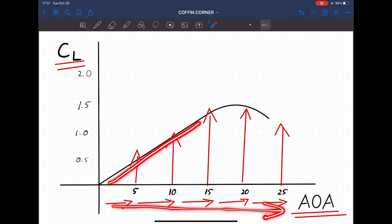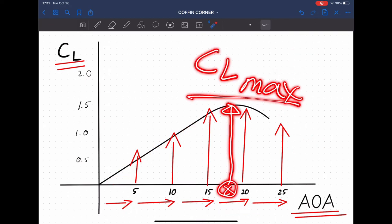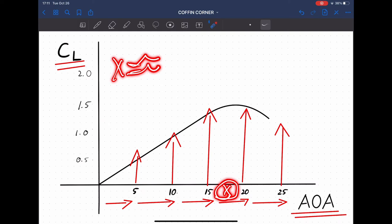As you can see, at 25 degrees, the coefficient of lift starts decreasing. So there's a point somewhere in between, typically around 17 degrees, where you get your CL max, or your maximum coefficient of lift. The typical stalling angle of attack is 17 degrees.